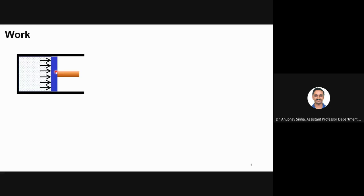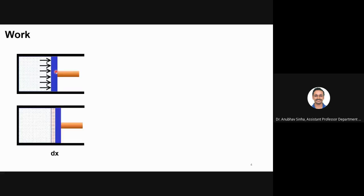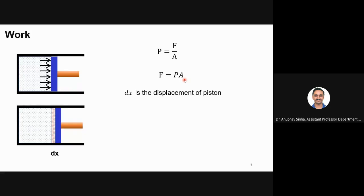The piston moves a small distance dx, moving from here to a forward location. Now what is the force applied? We know that pressure is equal to force by area, so the force applied is PA, where A is the cross-sectional area of the piston. The distance moved is dx. So can I calculate the work done here? I know the force, I know the displacement, so I will just use F times dx.